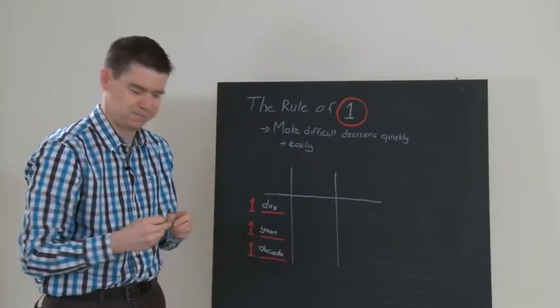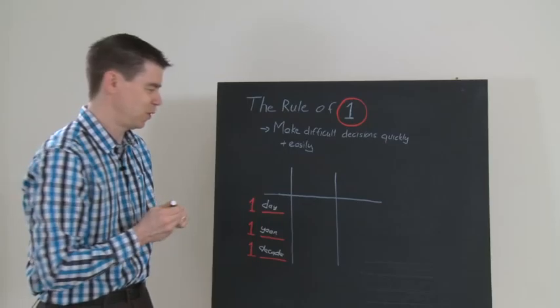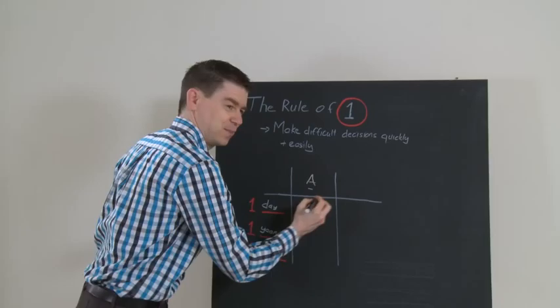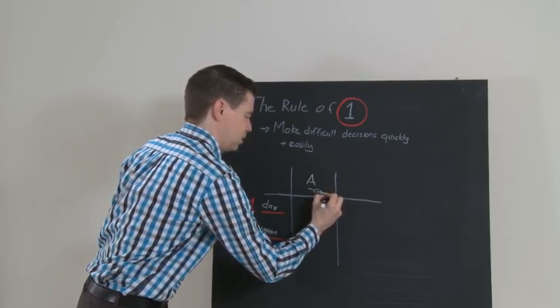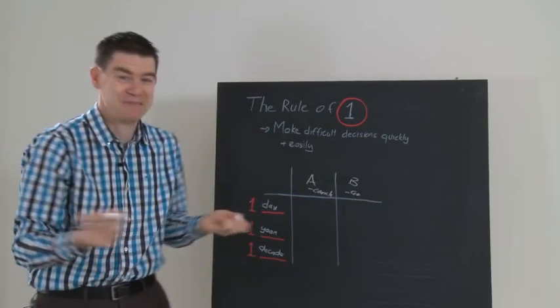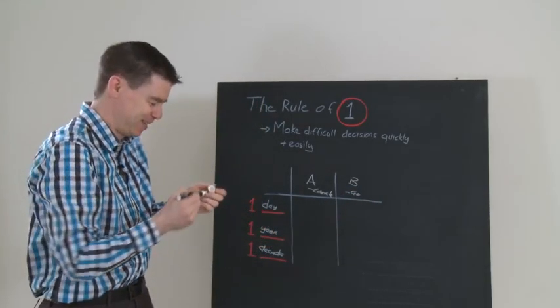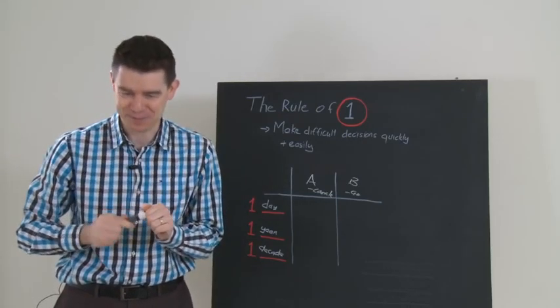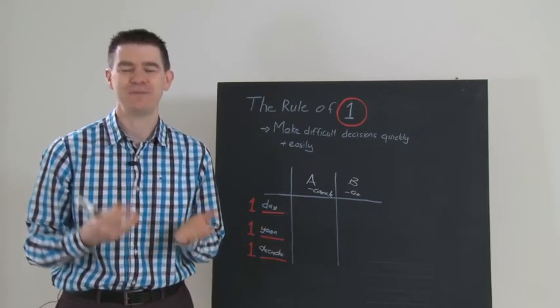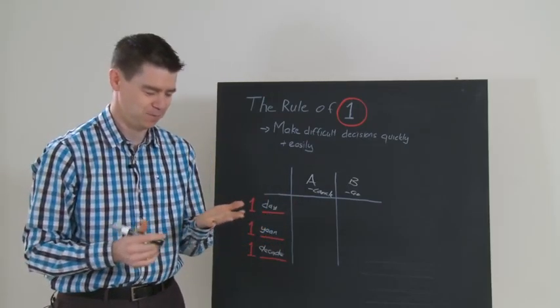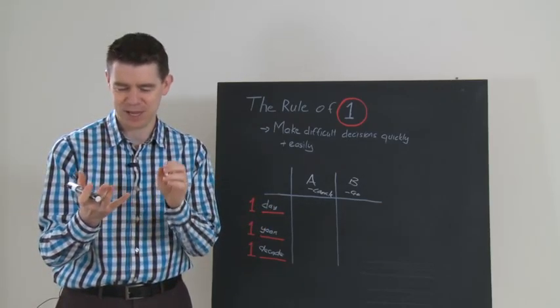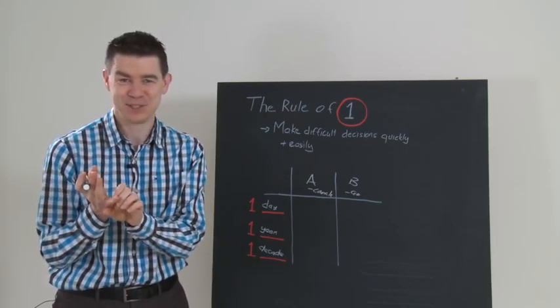There were two things I could do. The first one, let's call it A, was cancel. The second was B, which is go. That was really what it broke down to. The first thing I looked at was one day. If I cancelled, what would the effect be on my boss? I knew where he's coming from—the CFO had asked him to do it.